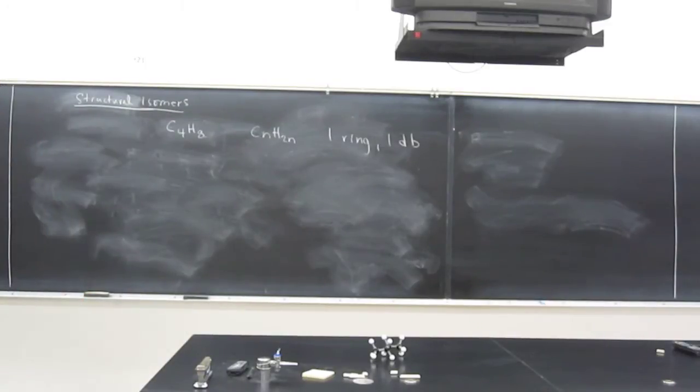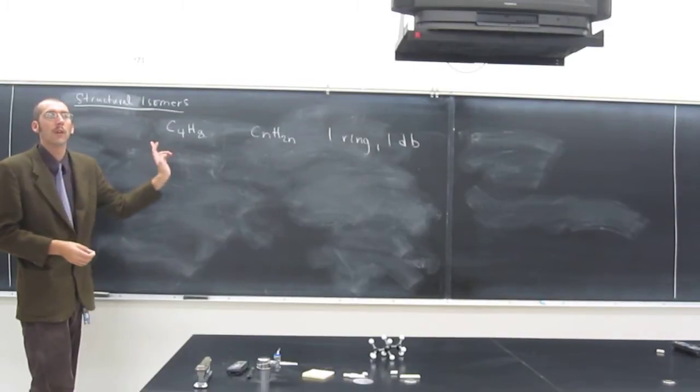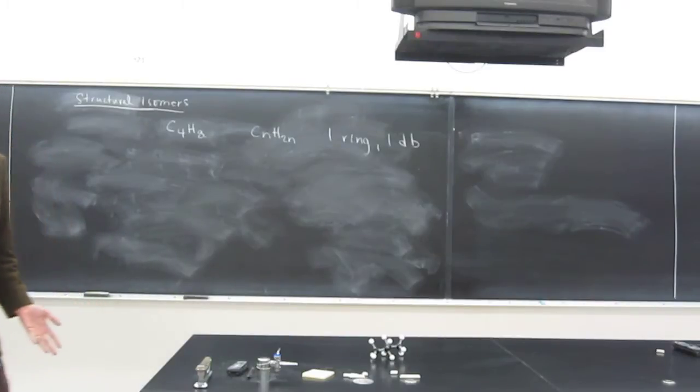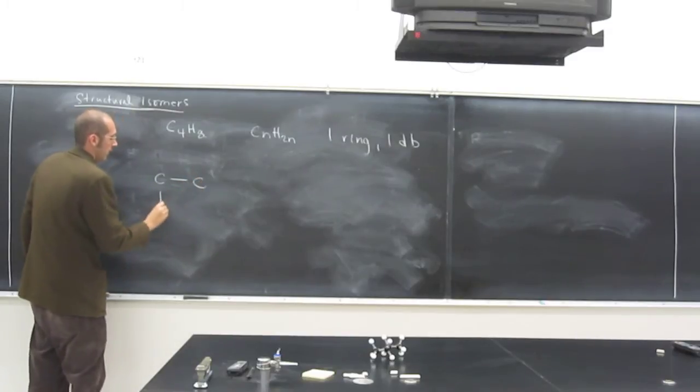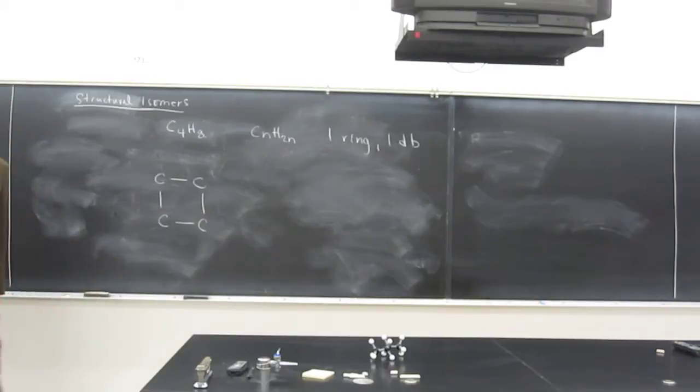So let's draw some molecules in a ring that have four carbon atoms. Remember, the hydrogens all have to be on the outside still, right, because they can only make the one bond. So if it's going to be in a ring, it's got to look something like that. Okay?